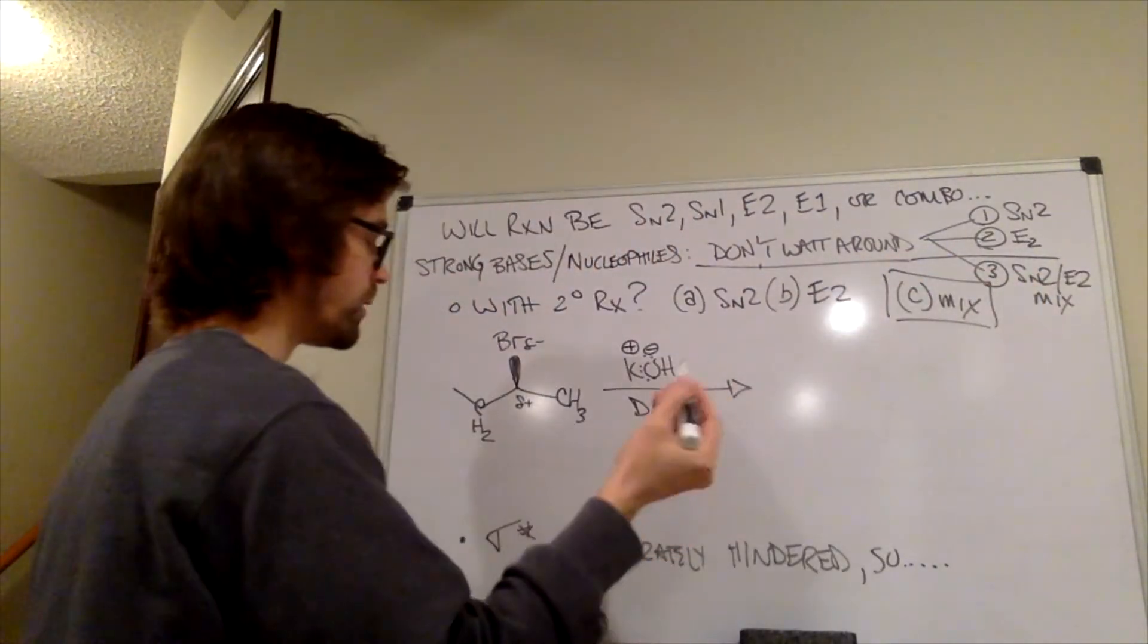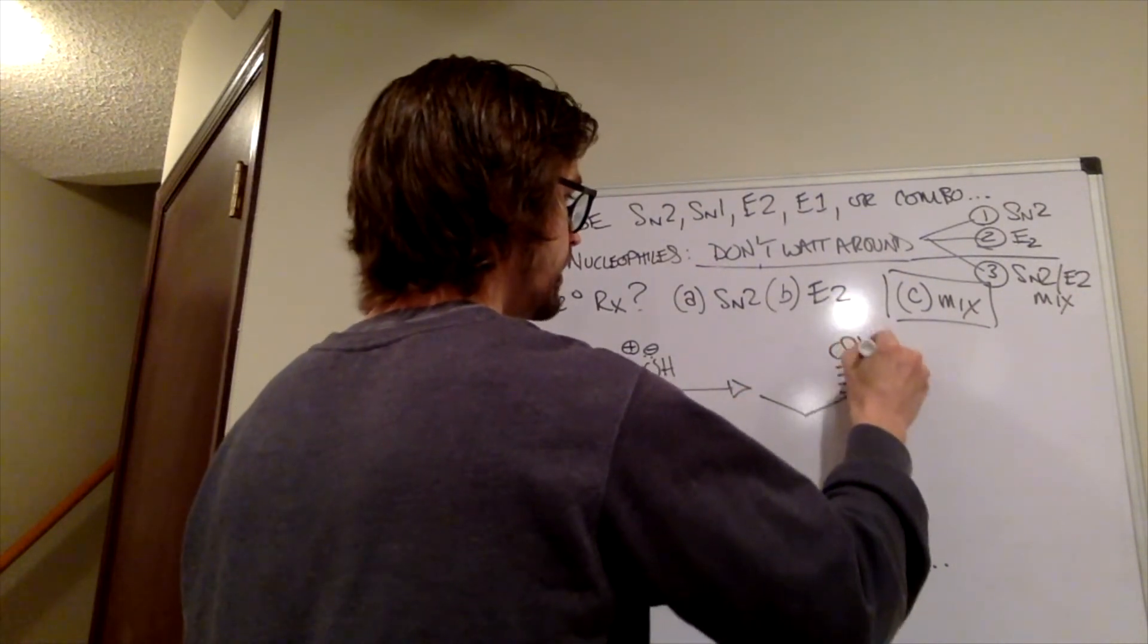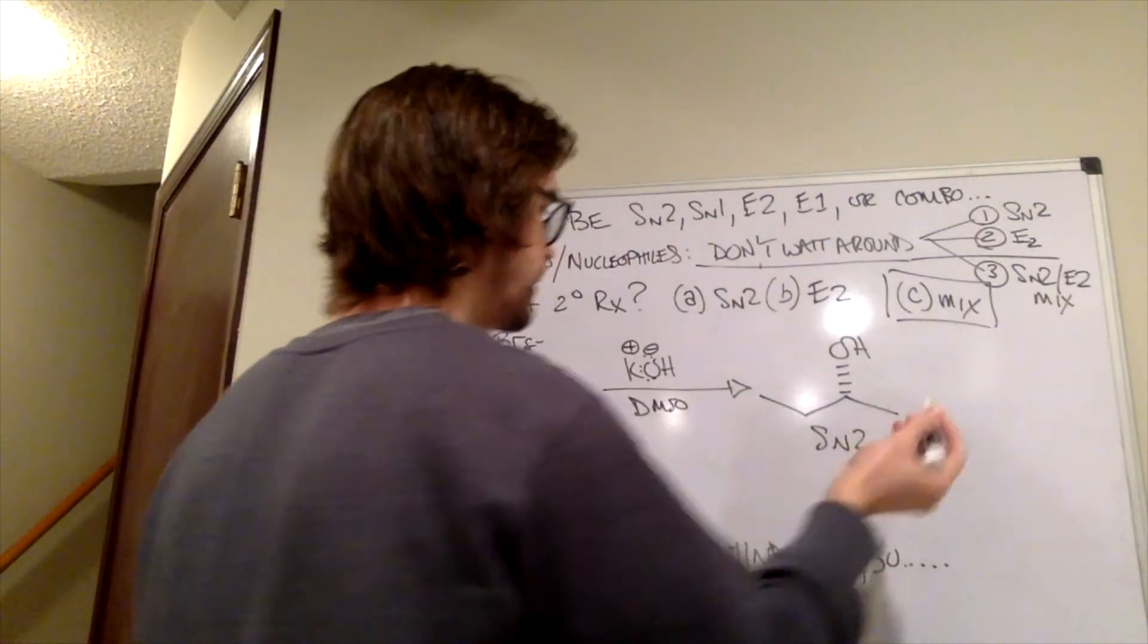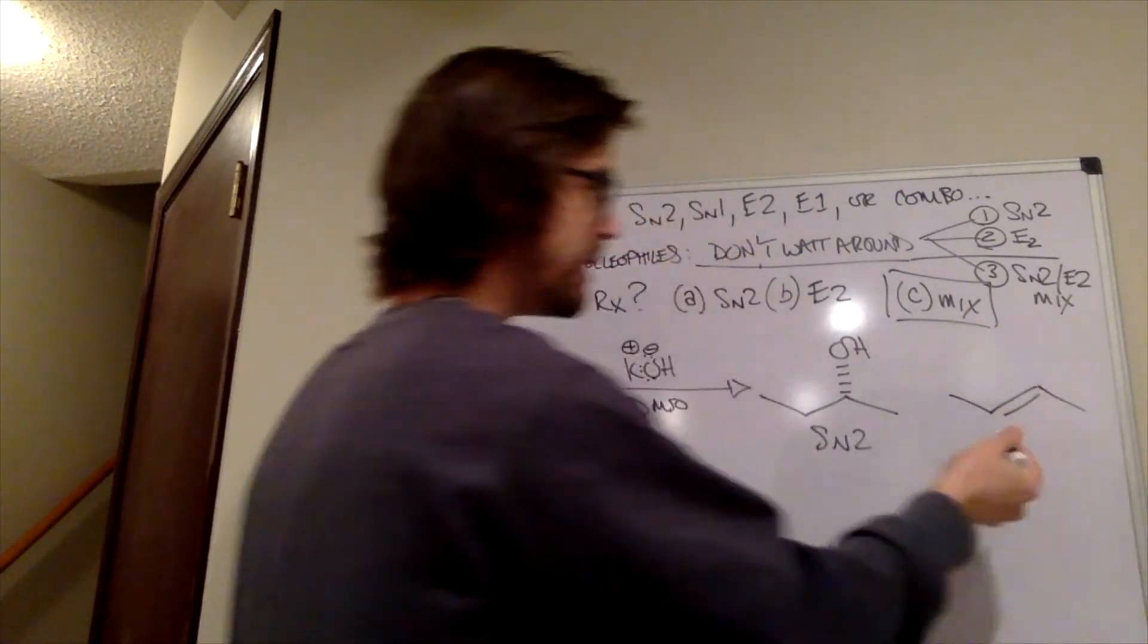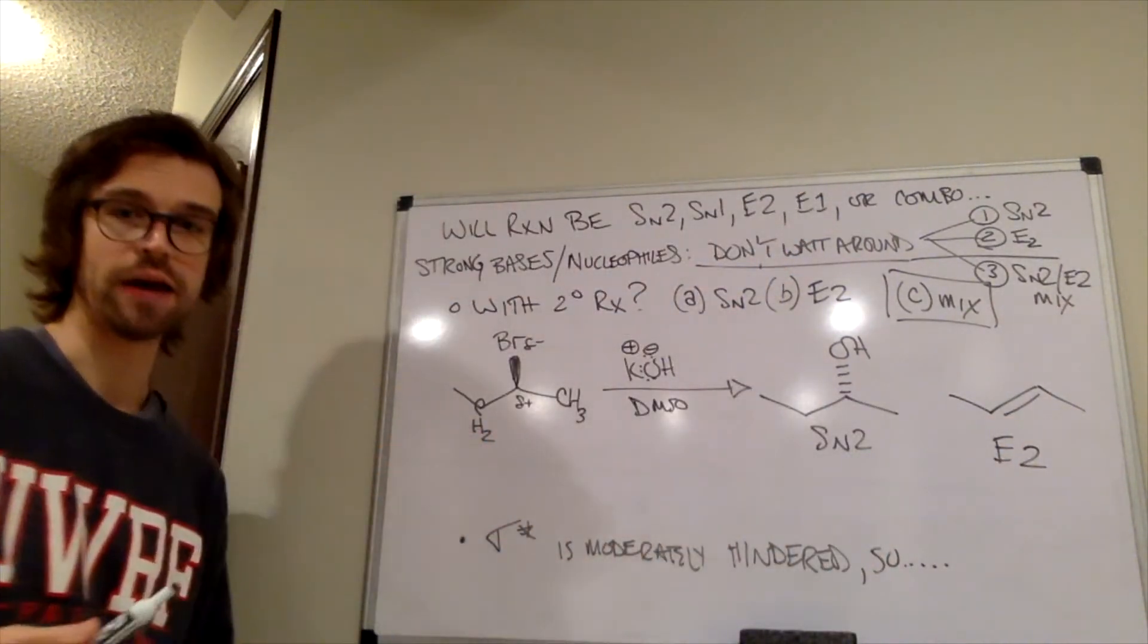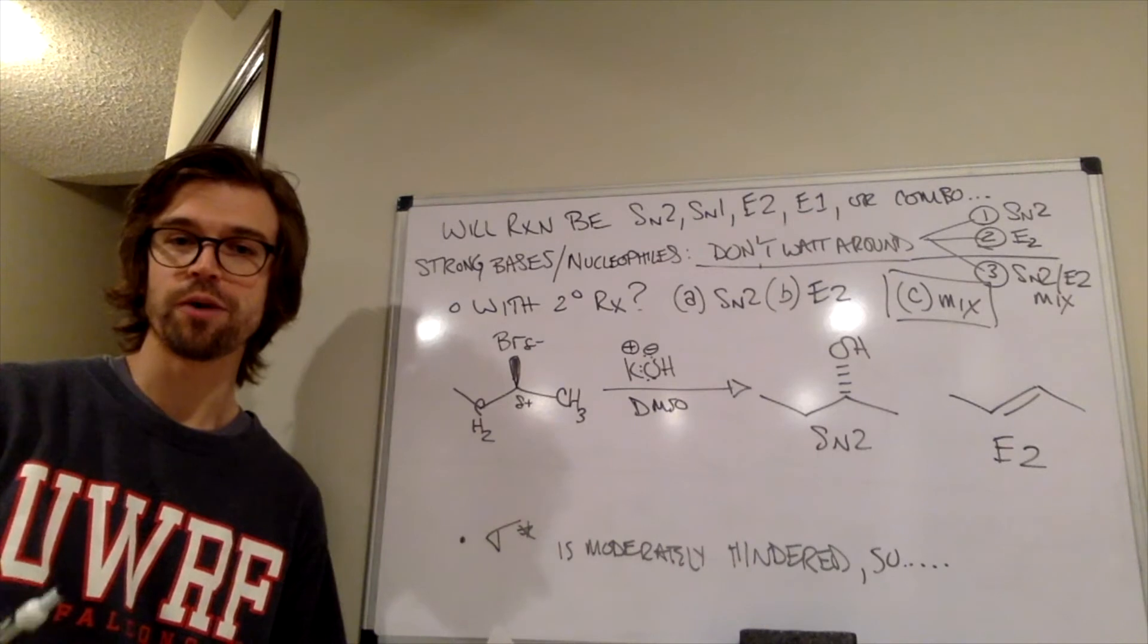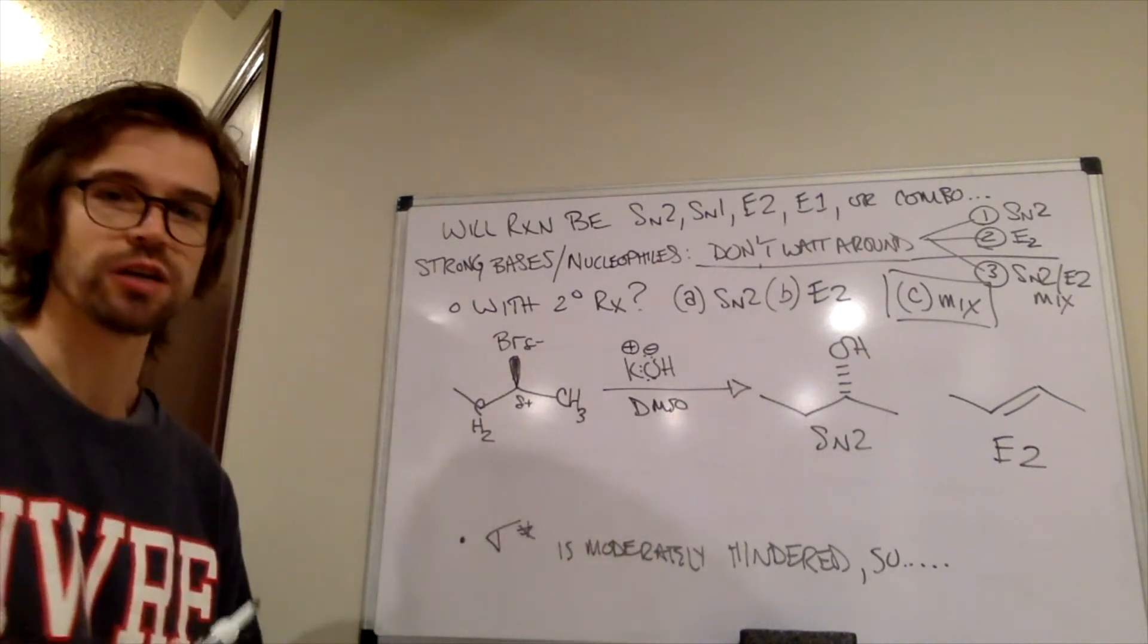And for this situation, it's going to do a mixture of SN2 and E2. So the answer is C on this one. So that means that we're going to get a mixture of the backside attack product, where it added to that sigma star orbital, so this is the SN2 product, and then the E2 product that's going to be the predominant product would be that trans-alkene, if it came in here and grabbed one of those hydrogens. This is the most stable of those alkene products. It probably is going to form a little bit of those other products as well, the cis-alkene and the monosubstituted, but that's going to be the major E2 product.